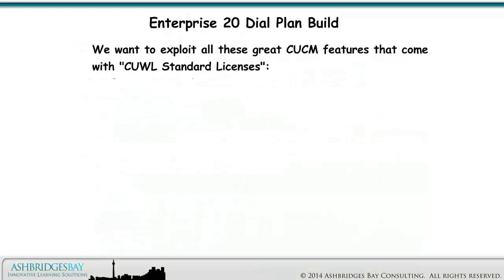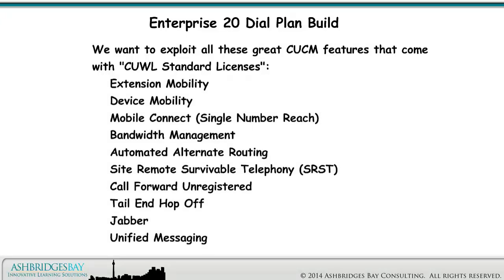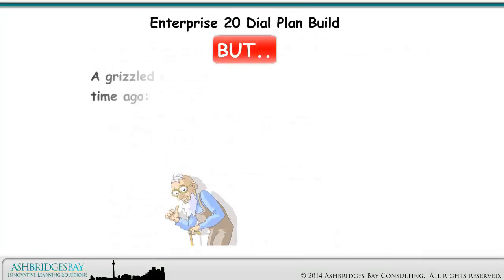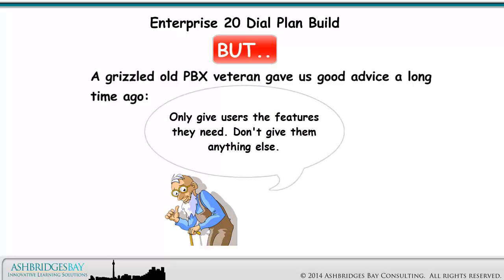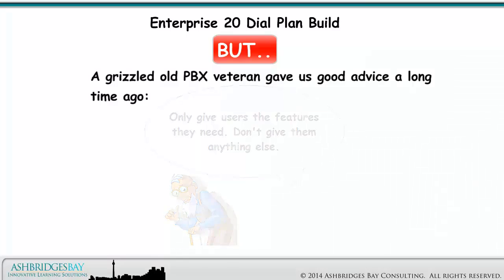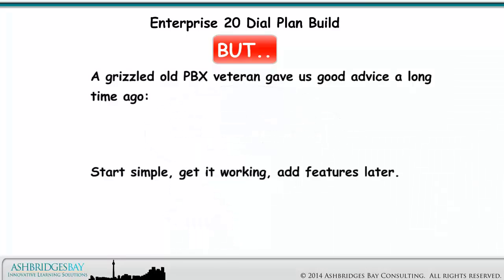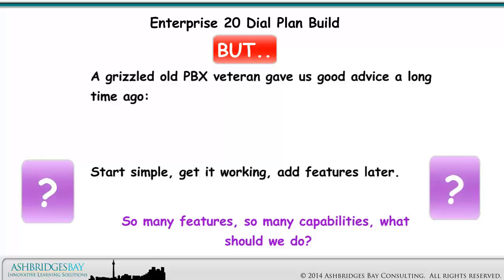We want to exploit all these great CUCM features that come with cool standard licenses. A grizzled old PBX veteran gave us good advice a long time ago: only give users the features they need. Don't give them anything else. Start simple, get it working, add features later. So many features, so many capabilities — what should we do?